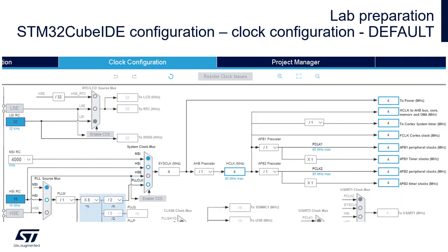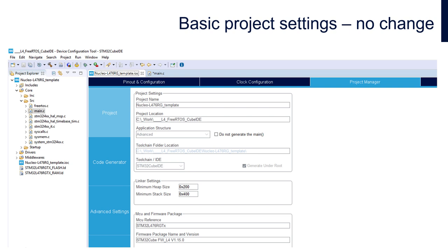We will keep the default clock configuration for 4 MHz coming from the MSI oscillator, so there is no need to change anything within clock configuration unless it is directly specified within a hands-on part. We have finished basic peripheral configuration. Let's generate the code for the selected toolchain. First we need to specify the location and name of our project. In case of STM32CubeIDE, it has been done at the beginning of project creation.